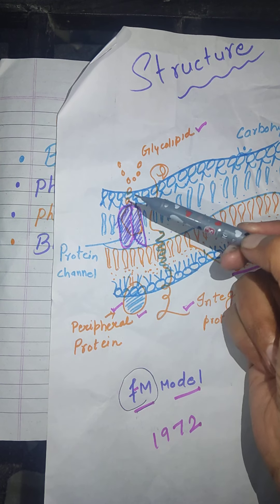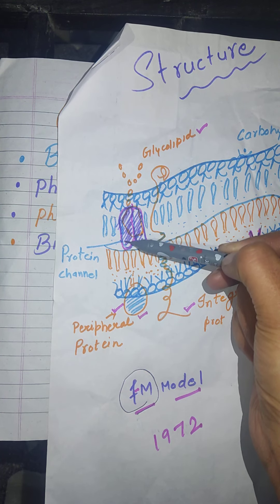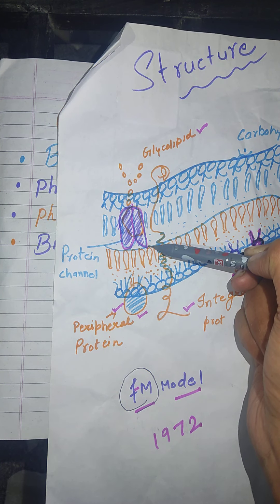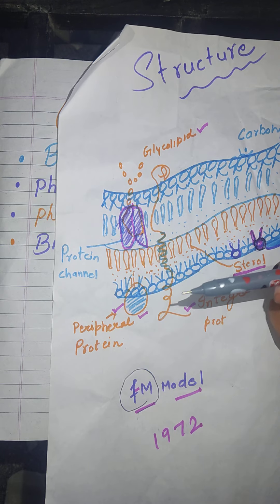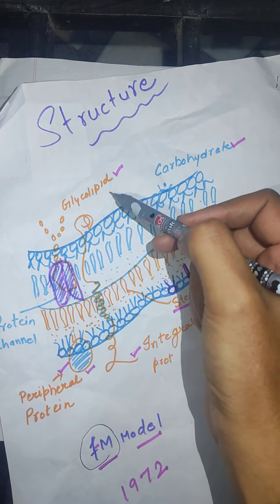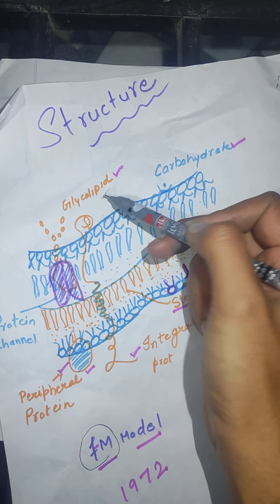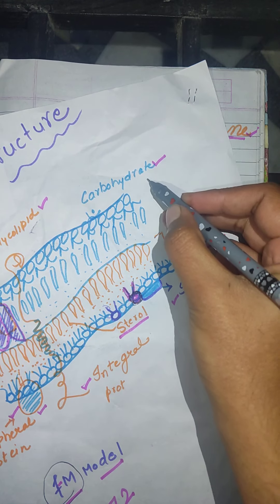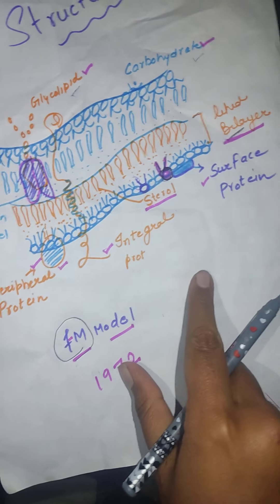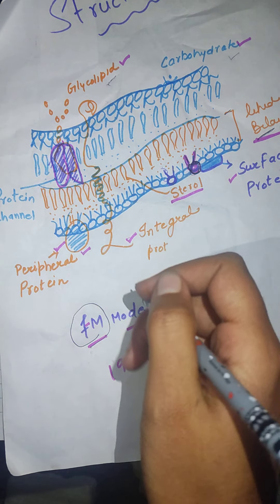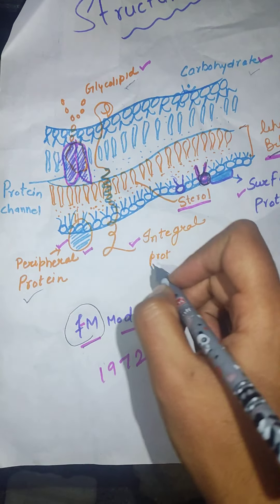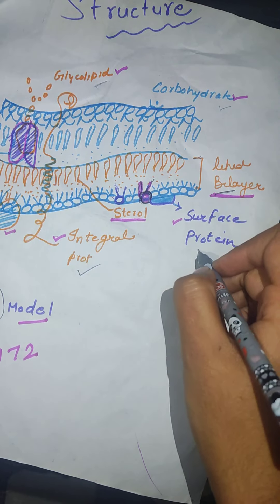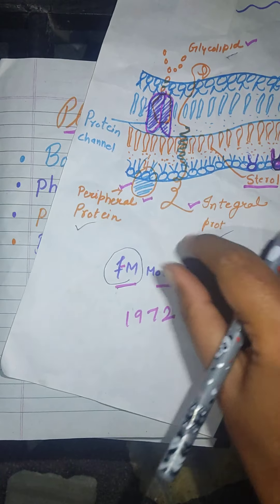The protein channel is present along the plasma membrane and this channel will basically channelize the transport of protein molecules across the membrane. There are also glycolipid molecules and carbohydrate moieties present in it. There are three main proteins present in the plasma membrane: the peripheral protein, the integral protein, and the surface protein.